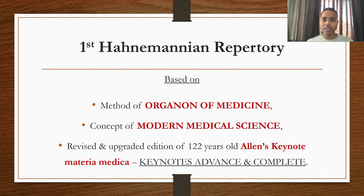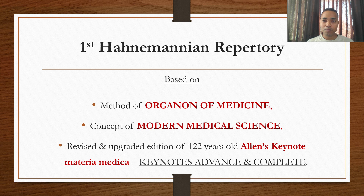Why is this the first Hahnemannian Repertory, and how? Because the method used for preparing this Repertory was taken from the aphorisms and references of the Organon of Medicine and the Chronic Diseases.